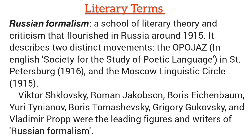What is Russian Formalism? Russian Formalism was a school of literary theory and criticism that flourished in Russia around 1915. It describes two distinct movements: the Opojaz (Society for the Study of Poetic Language) in St. Petersburg and the Moscow Linguistic Circle. Key figures include Victor Shklovsky, Roman Jakobson, Boris Eichenbaum, Yuri Tynyanov, Boris Tomashevsky, Gregory Gukovsky, and Vladimir Propp.